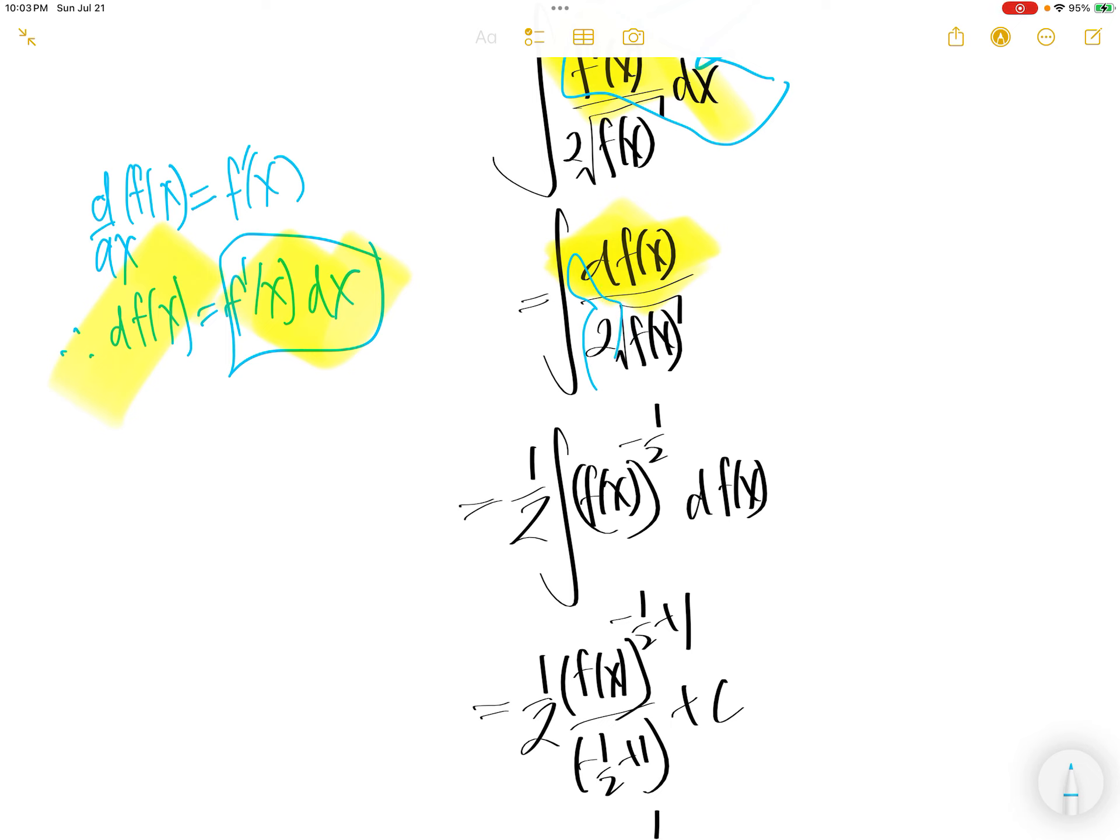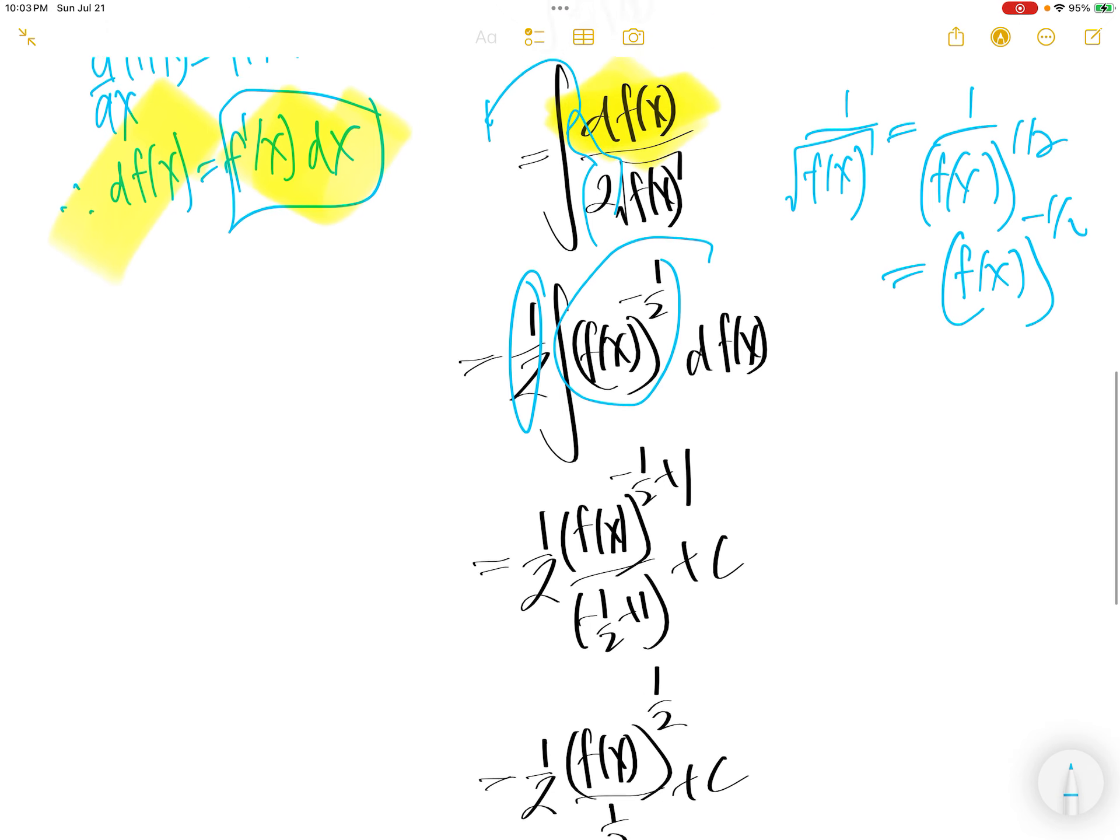Okay, so half constant out over here. And then we're going to write 1 over square root f of x as 1 over f of x to the power of half, which is equal to f of x to the power of negative half. This is what we did.